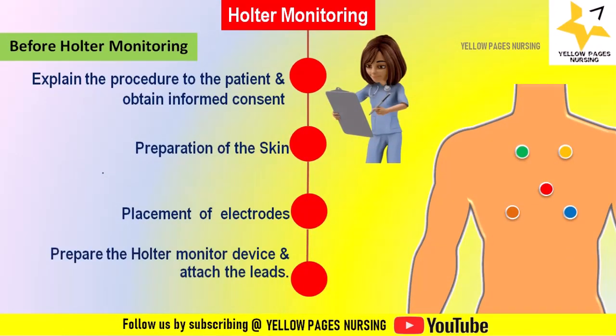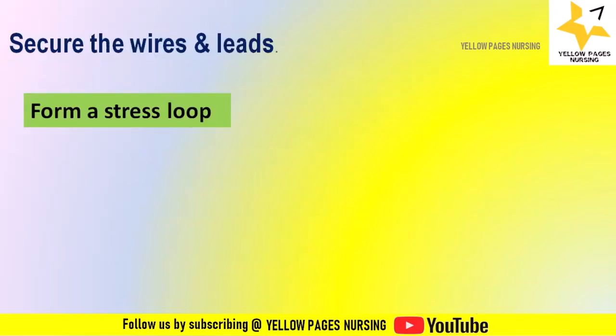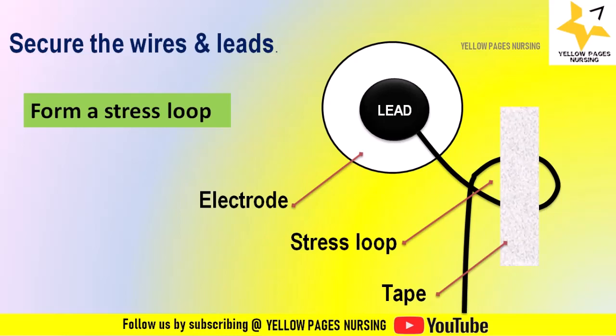Prepare the Holter monitor device, ensuring it is functional, has adequate battery life, and is ready to record data. Attach the leads to the electrodes and start it. Secure the wires and leads along the patient's body using medical tape or adhesive to prevent accidental disconnection. Form a stress loop with each electrode lead, tape the loop to the skin, and leave enough slack between the electrode and the stress loop.